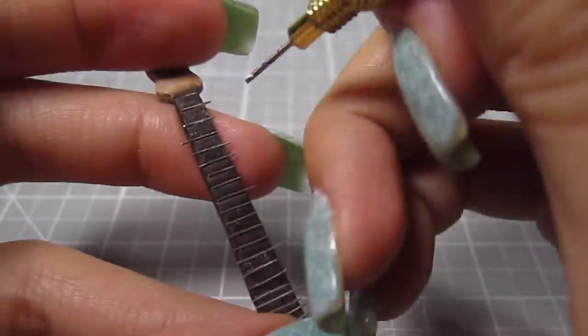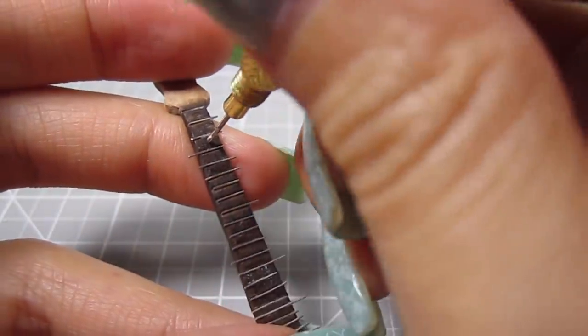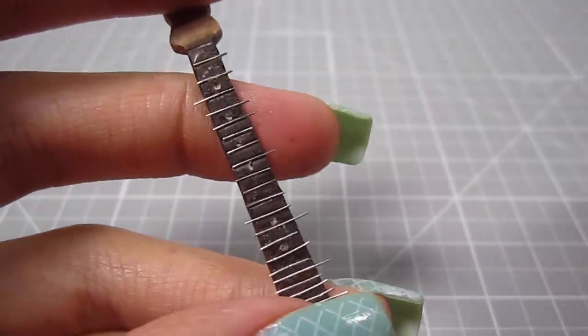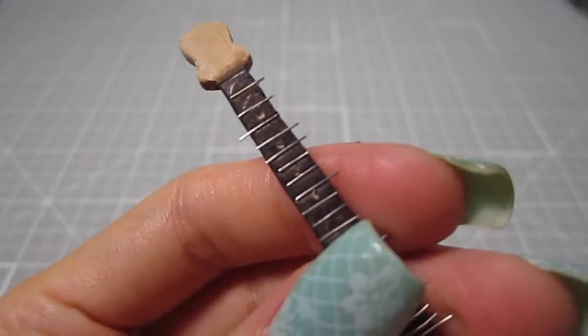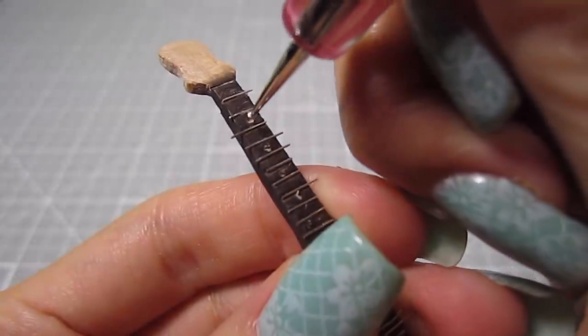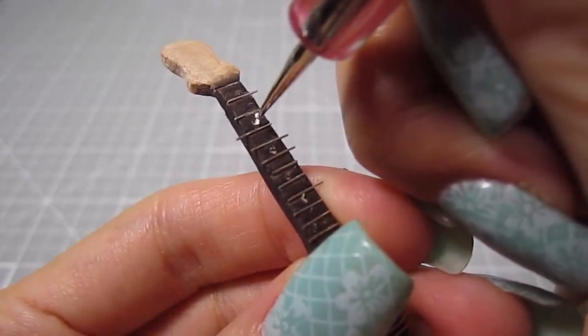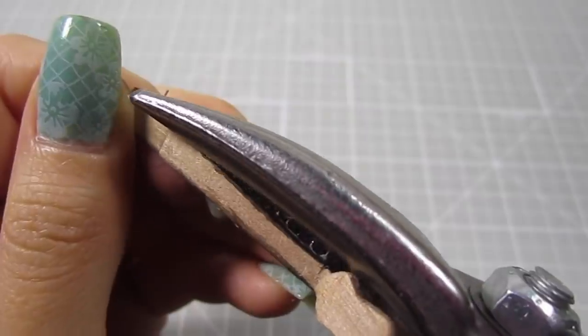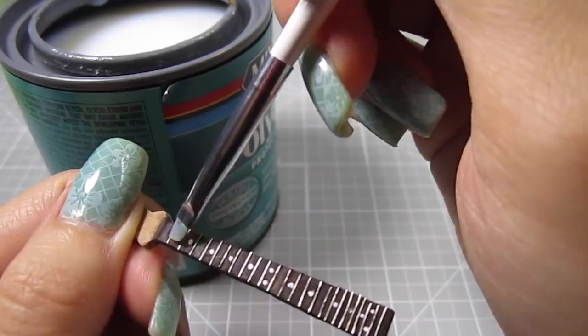With a tiny hand drill, I make some shallow holes into the frets. I do it on frets 3, 5, 7, 9, 12 and so on. This is a good time to reference a picture of a real guitar on Google. Then I add some white paint into those holes. Trim off the excess wire and add some varnish for a glossy look.